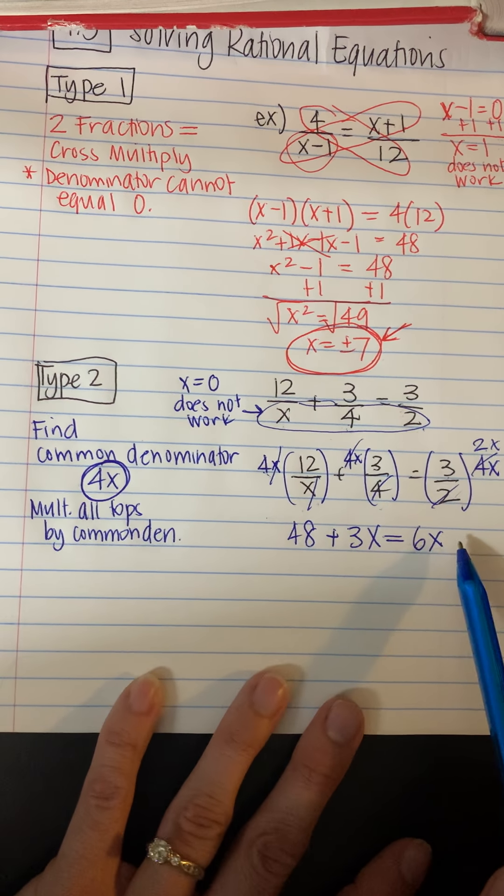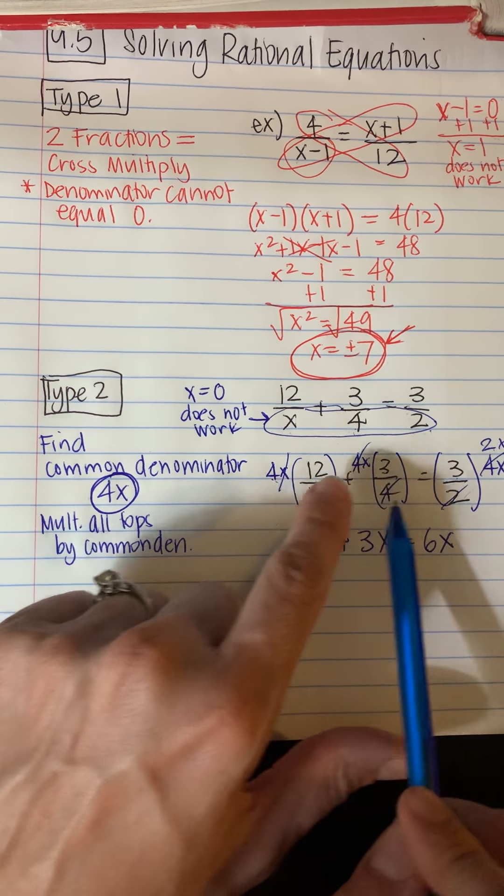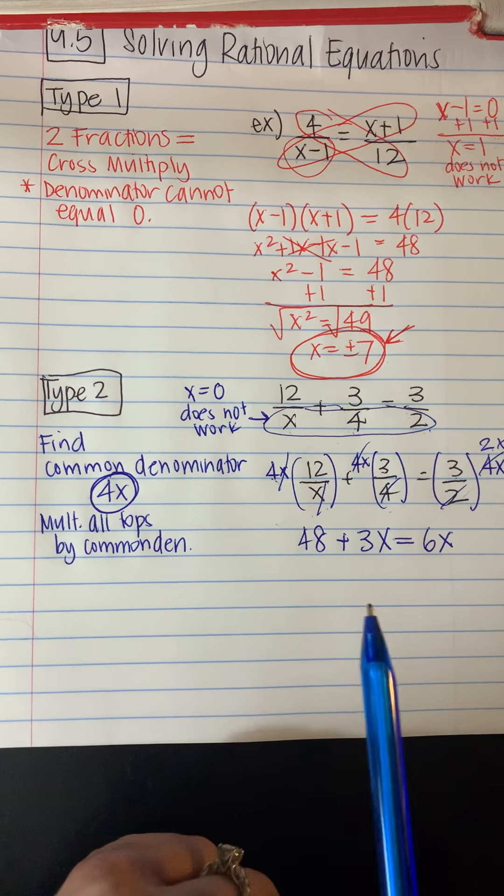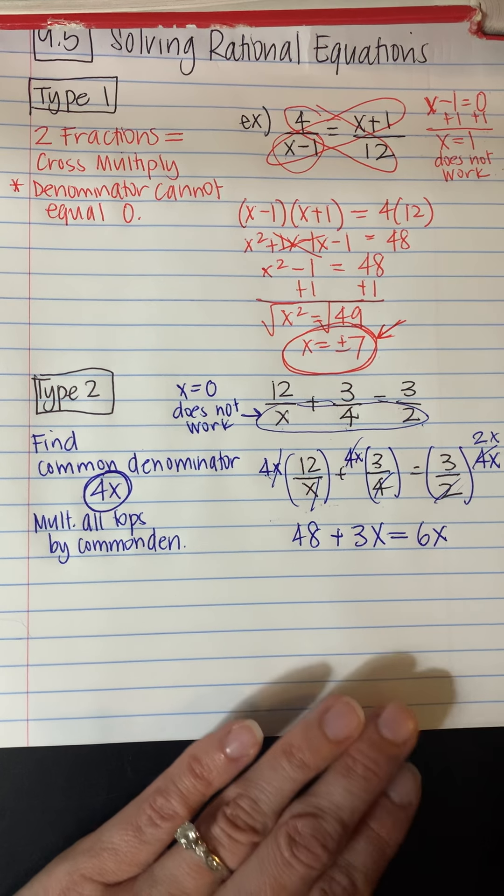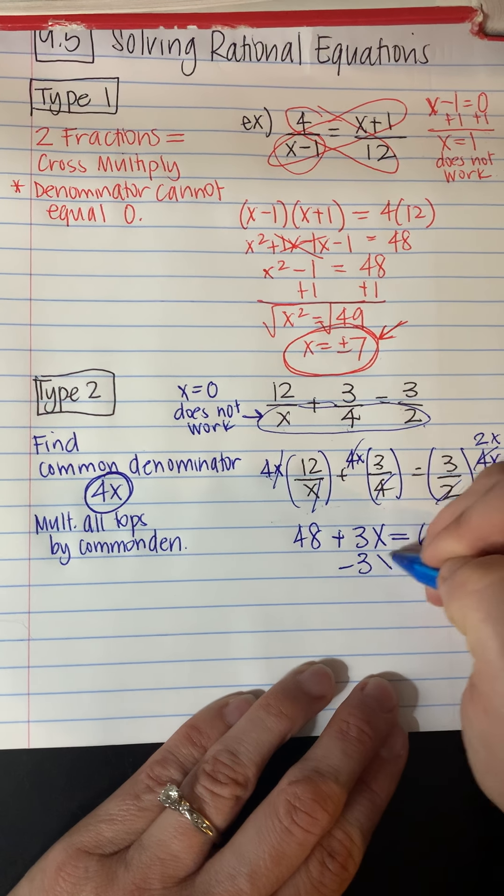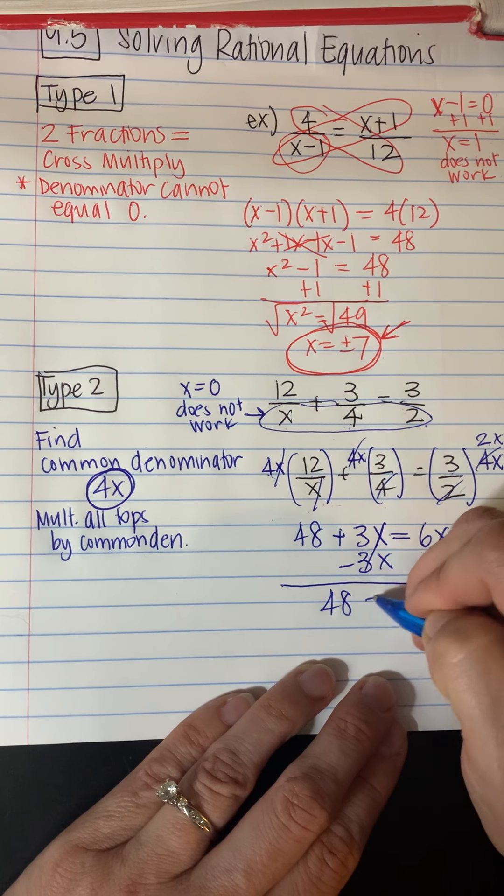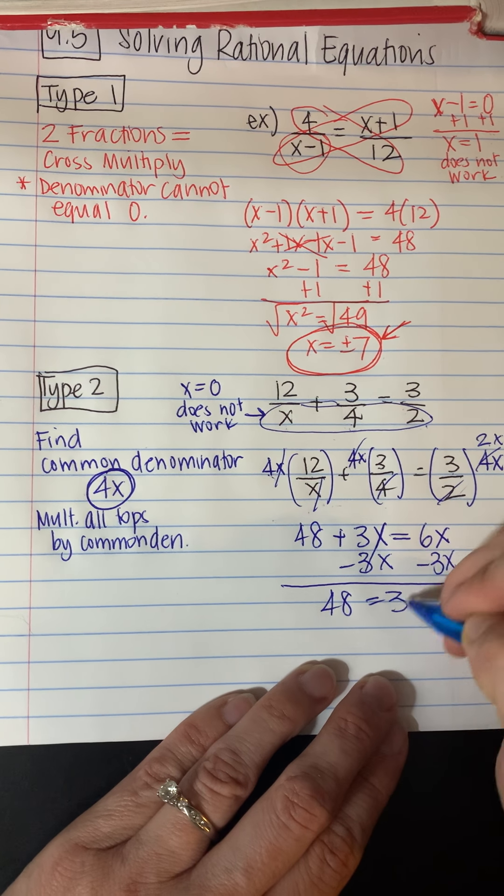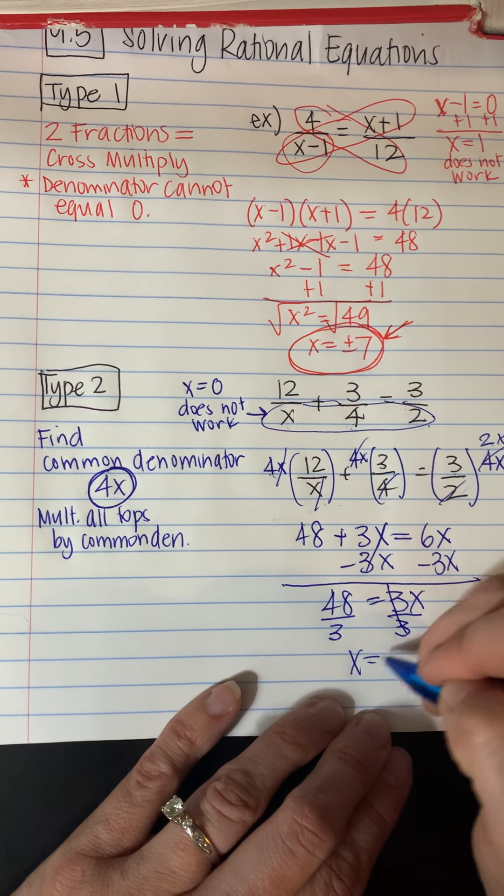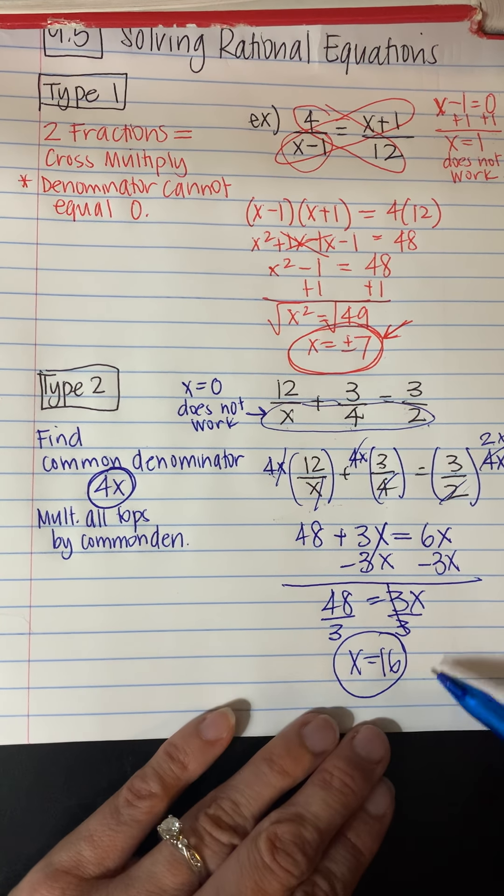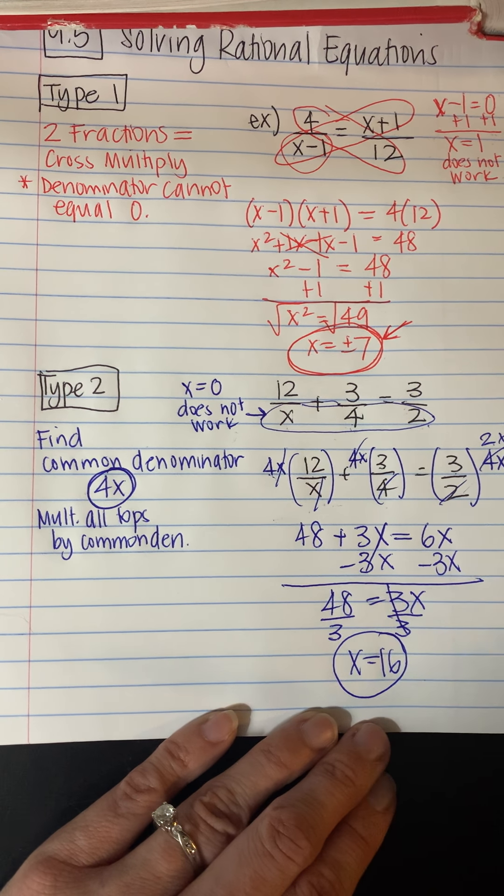So this canceled, that canceled. So I can do some cross-cancelling here. And now, this becomes a pretty simple equation for me to solve. So I'm going to move this 3x over. 6x minus 3x is 3x. And you can divide by 3. And I find out x is 16. Now, is that one of my excluded answers? No. x equals 0 didn't work, but this works just fine.